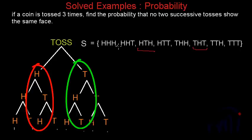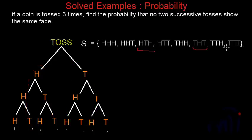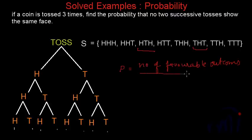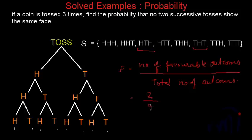Here all the tosses show heads. Here the first two show heads. In this case the last two show tails. The last two over here show heads. Here there are two consecutive tails, and here all three of them are tails. So the probability is number of favorable outcomes divided by total number of outcomes — two favorable outcomes out of eight total — which equals one by four.